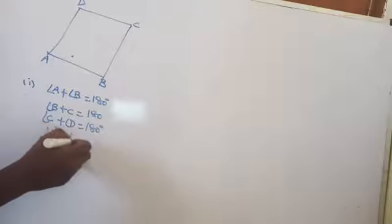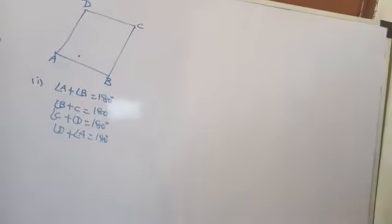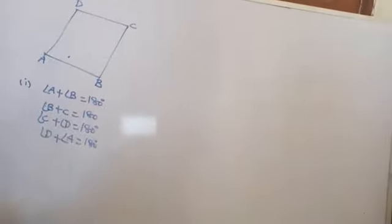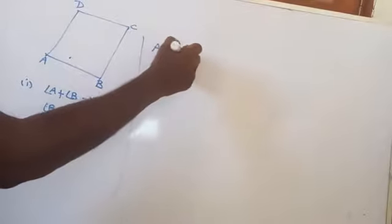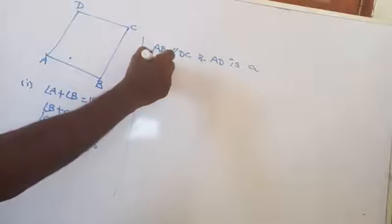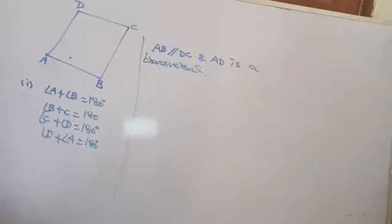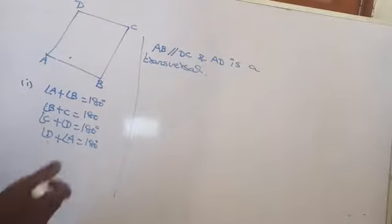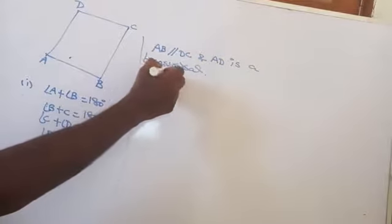AB is parallel to DC and AD is a transversal. We can conclude that angle A and angle D are co-interior angles on the same side of the transversal. Therefore, angle A plus angle D is equal to 180 degrees.